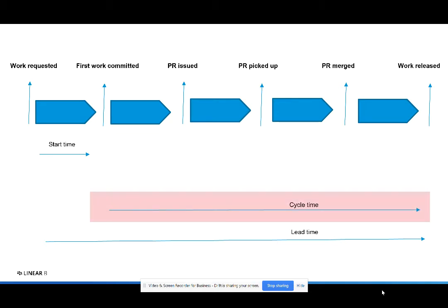Within cycle time, there are a number of phases that are important to track as well. The time it takes your developer to work on the new feature and issue the first PR, we call coding time. After the PR has been issued, the time it takes for it to get picked up is pickup time. After the PR has been picked up, the time it takes to go through the review process, make changes, and merge that branch, we call review time.